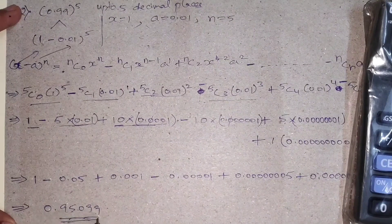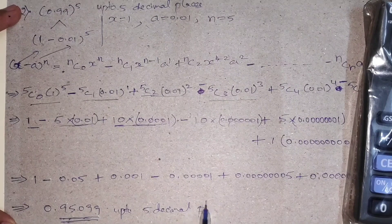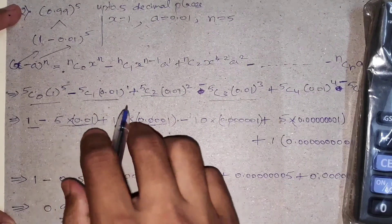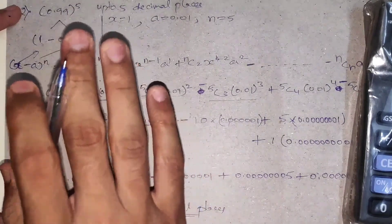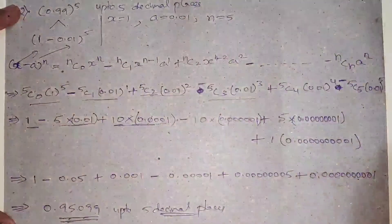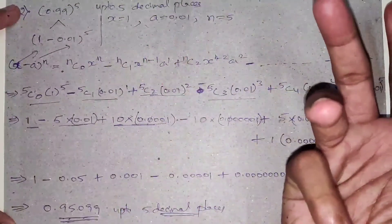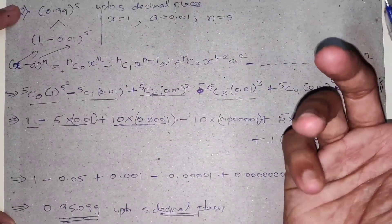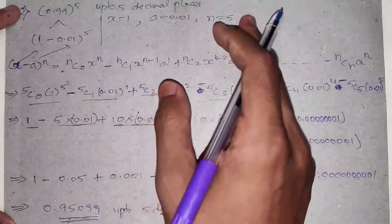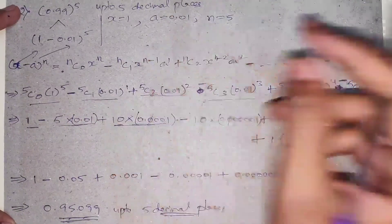So the same answer up to 5 decimal places is confirmed. Practice adding plus and minus terms like this. It's simple once you get the pattern. Keep practicing, and the next video will cover the next part. Thank you.